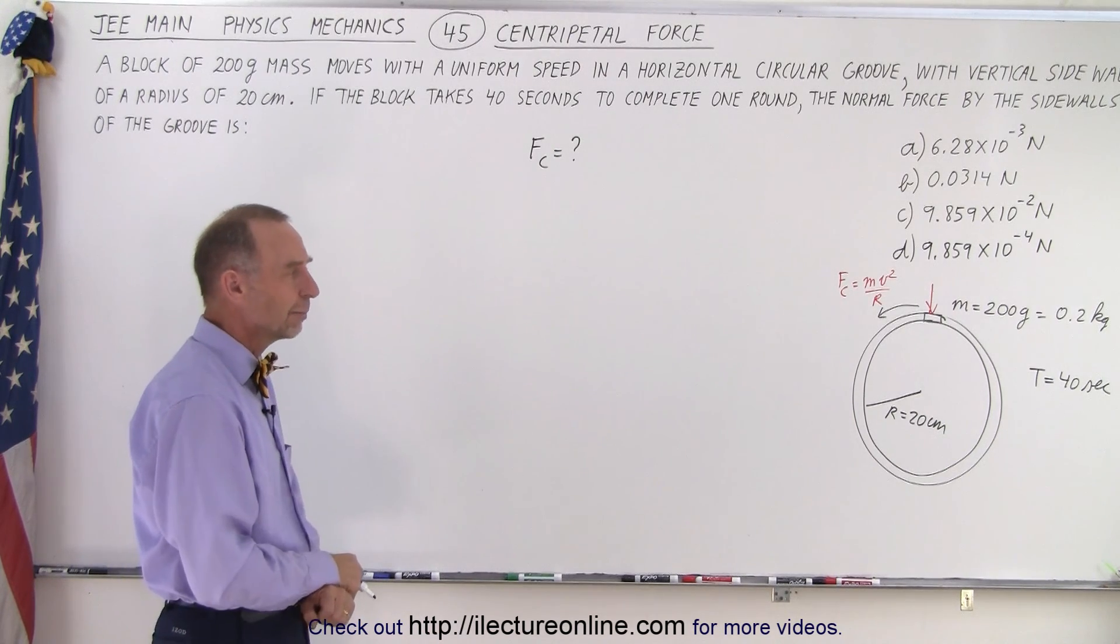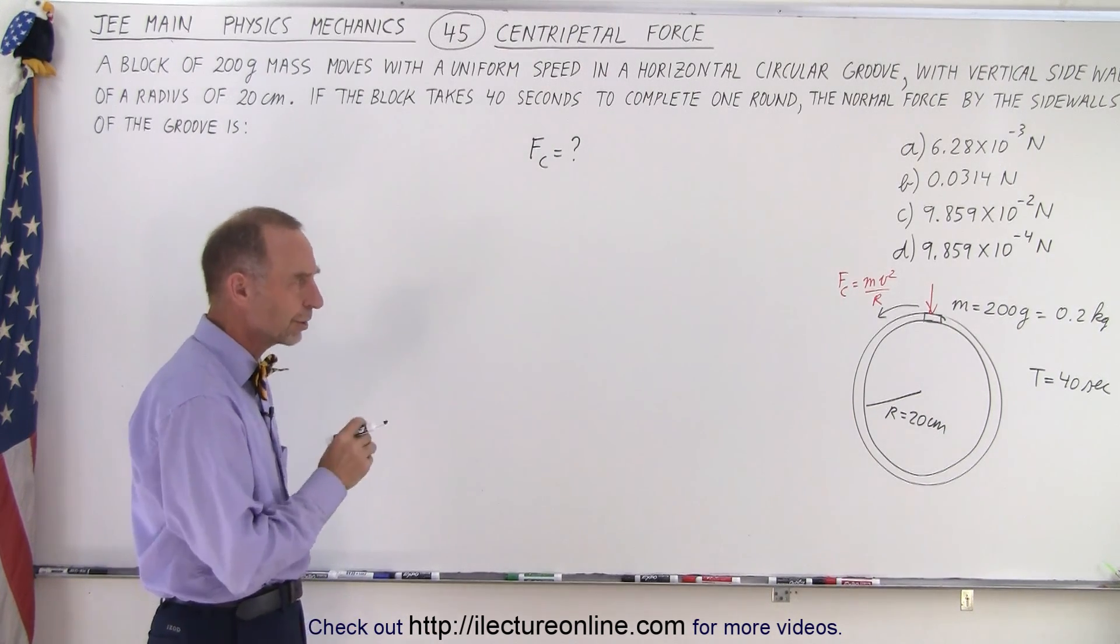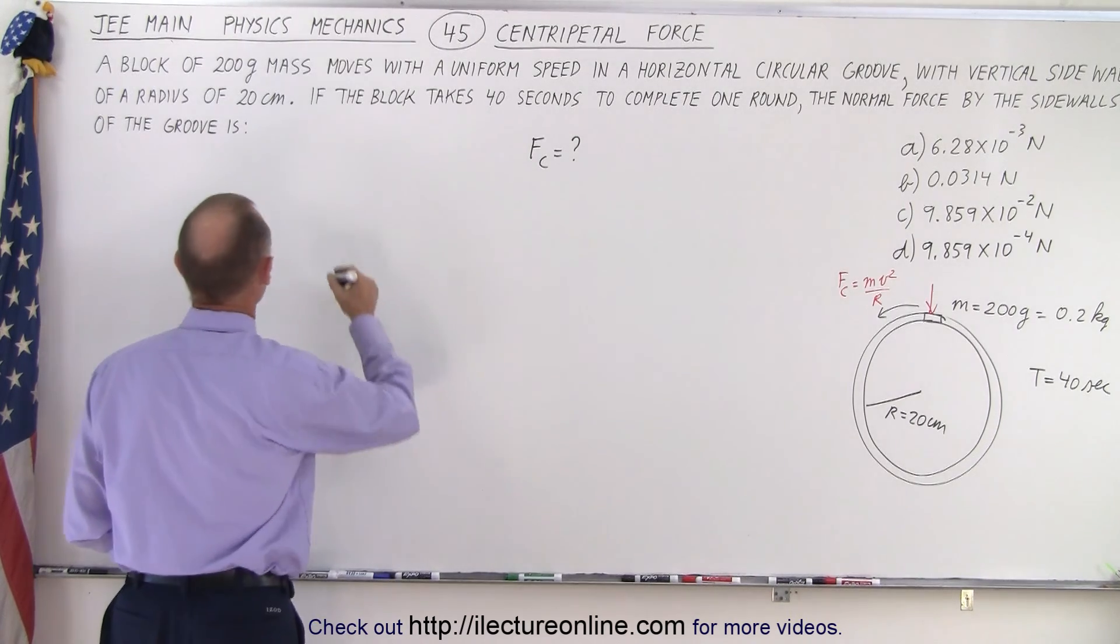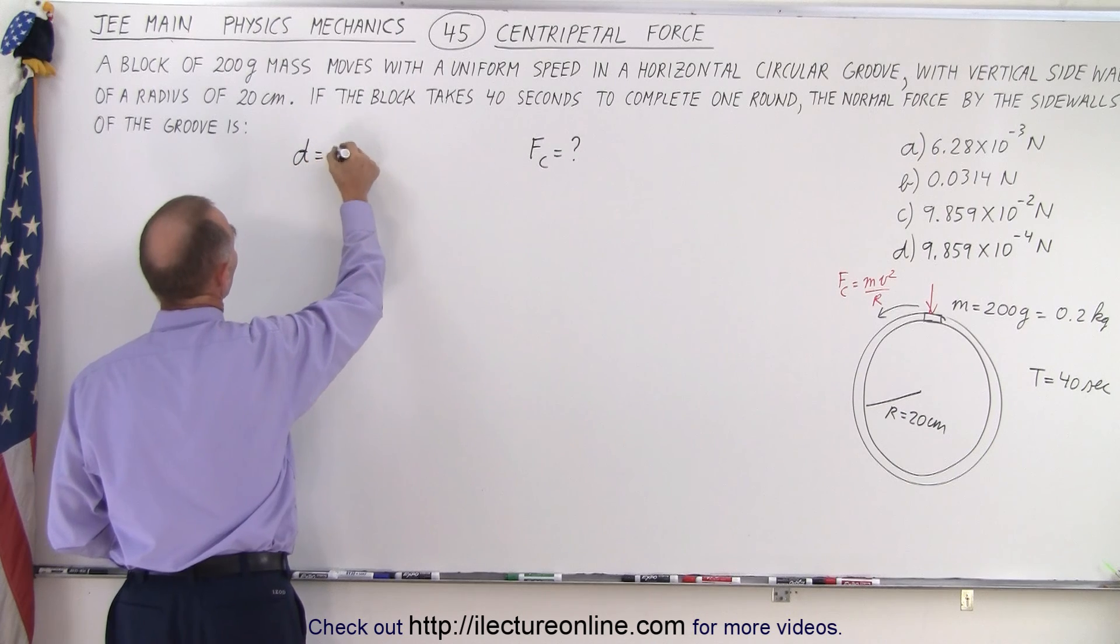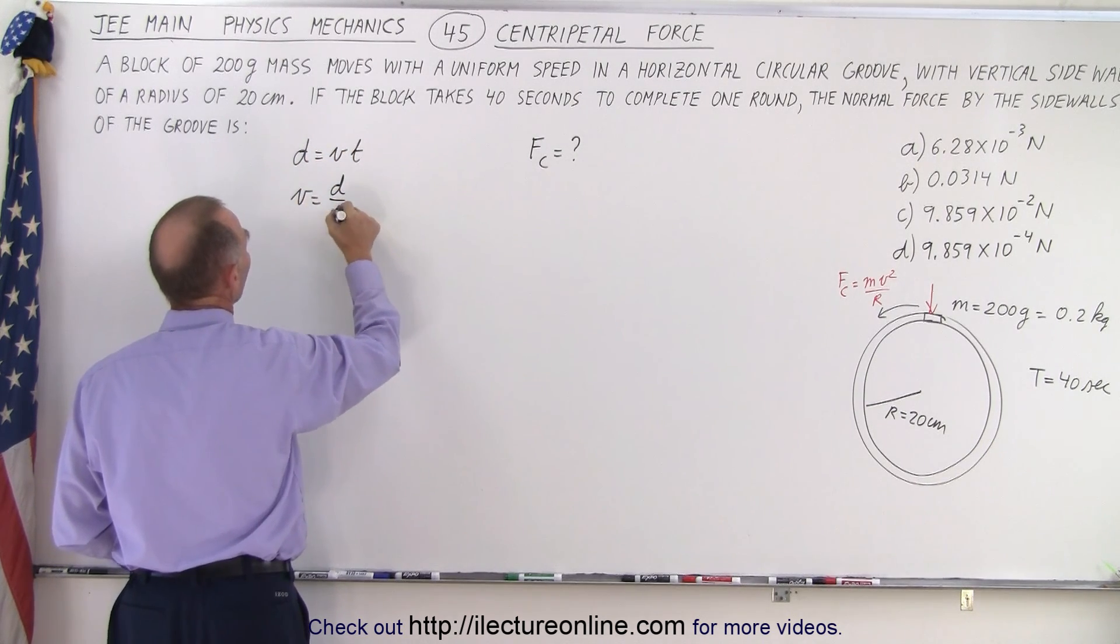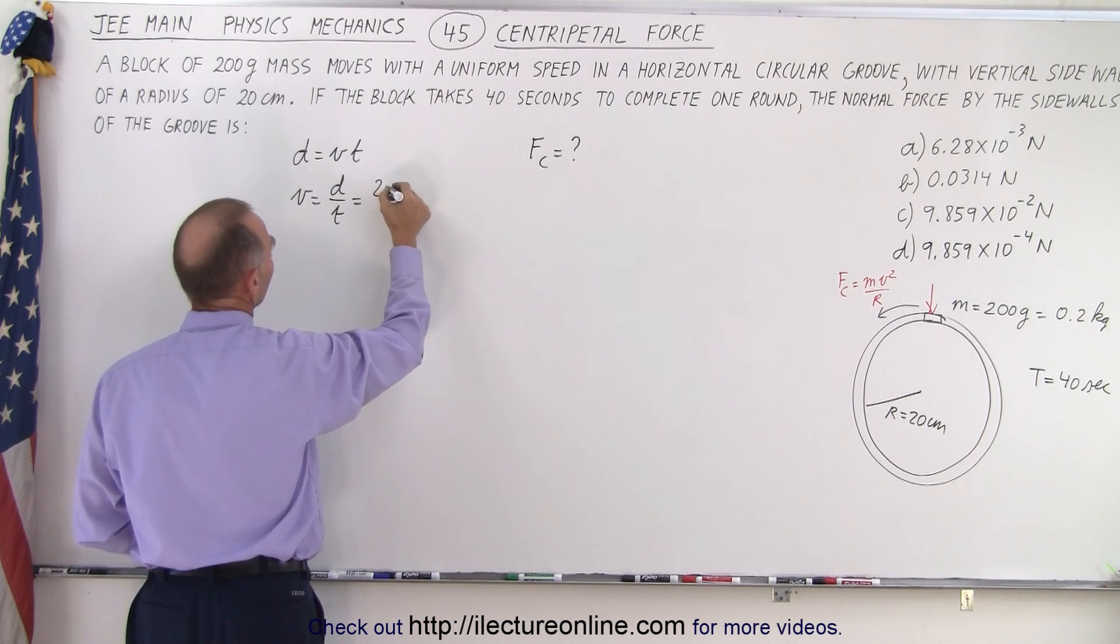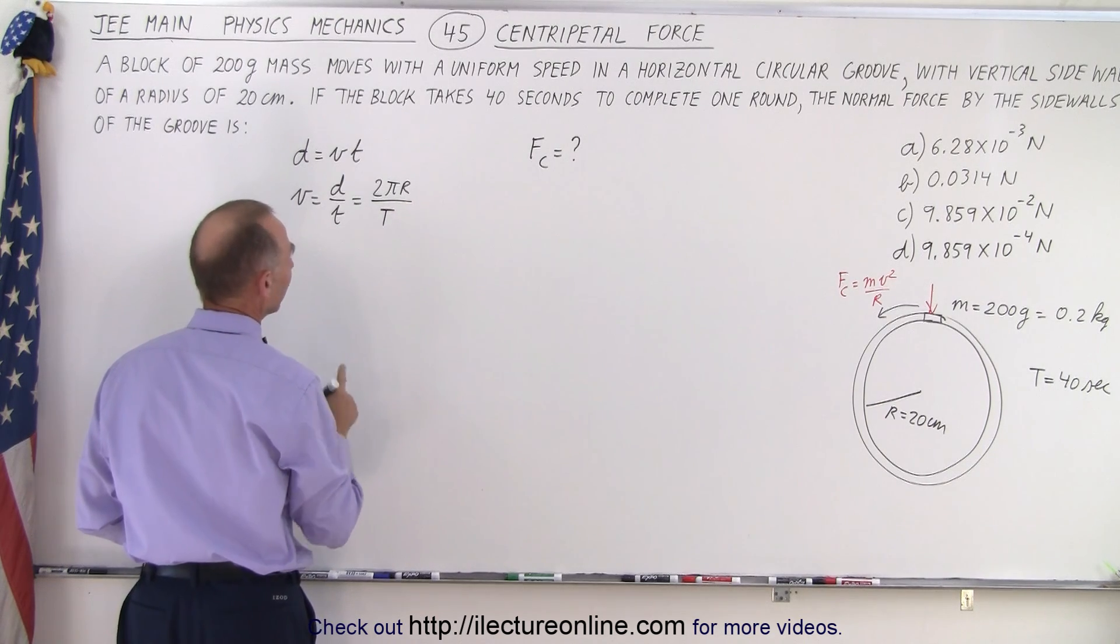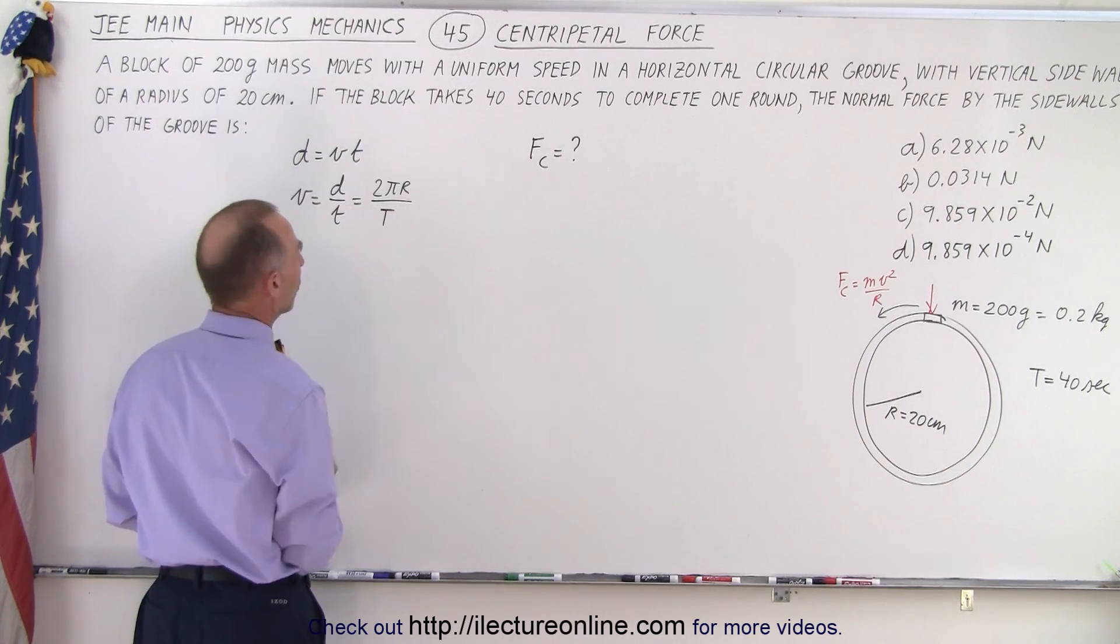Now, of course, they don't give us the velocity, but they do give us the period, and we know the radius. So from that, we can get the circumference. We know that distance equals velocity times time, which means velocity is equal to distance over time. And the distance in this case is going to be the circumference 2πr, and the time is going to be the period T. So that is what we're going to use in our equation.